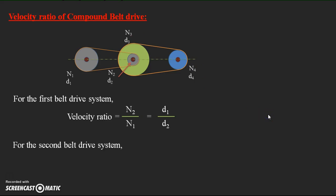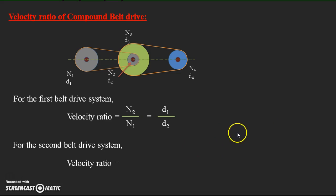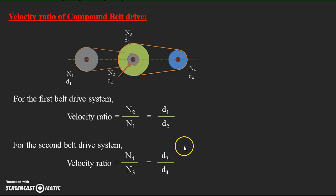Similarly, for the second belt drive system with pulleys N3, D3 and N4, D4, the velocity ratio is N4 by N3 equal to D3 by D4. These two equations are written using the velocity ratio expression for the simple belt drive system.